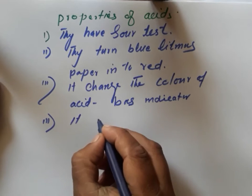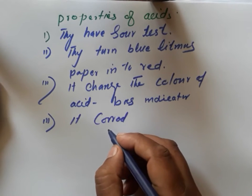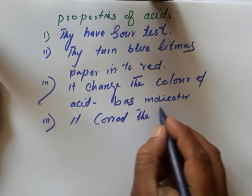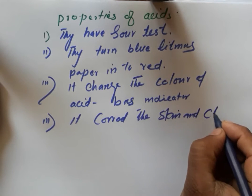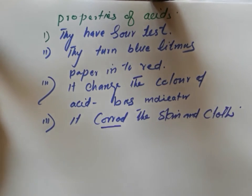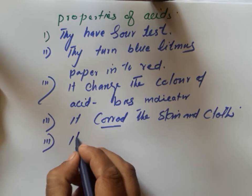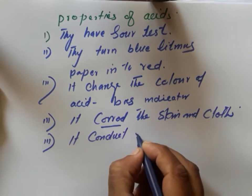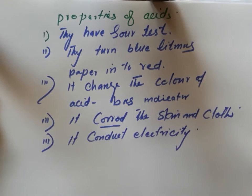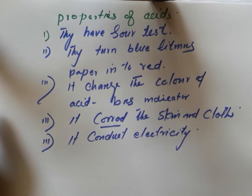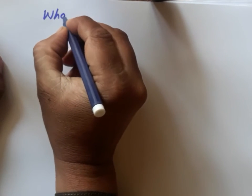Property number three: acids are corrosive — they can damage skin and cloth. Property number four: acids conduct electricity.